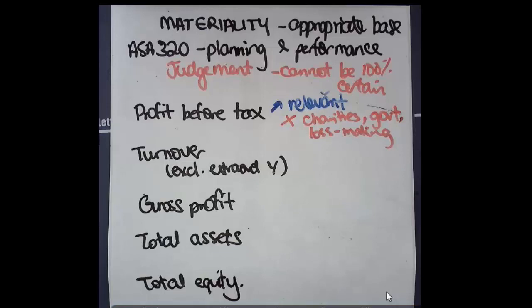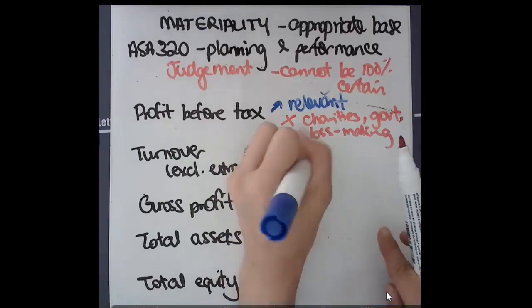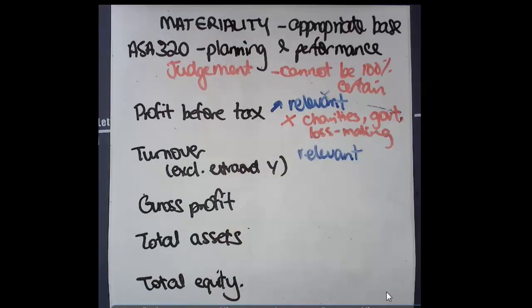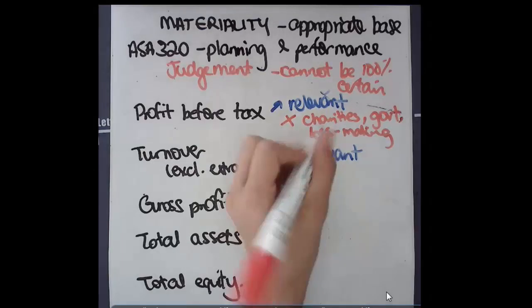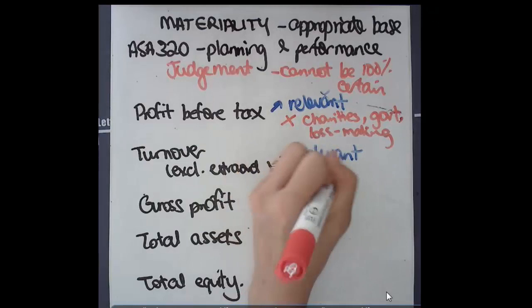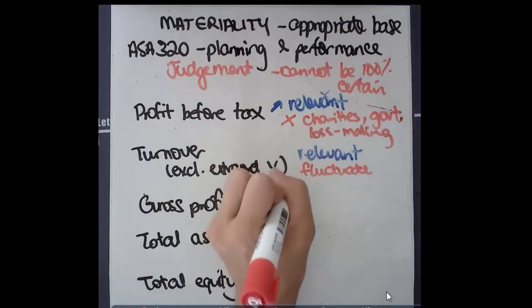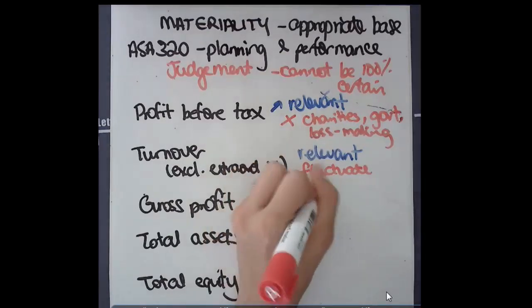So profit before tax is definitely relevant, but the issue can be that it might not be stable. Profit can change a lot from year to year, it can go up and down. Turnover can be relevant to a lot of firms because most organizations want to increase sales. It excludes any extraordinary income, but again the issue is that it can fluctuate a lot depending on the business.